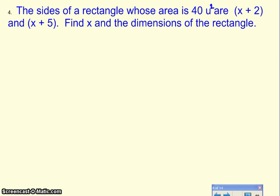This problem says the sides of a rectangle, whose area is 40 units squared, are x plus 2 and x plus 5. Find x, so that's the first thing we'll have to do, and the dimensions of the rectangle. So it looks like a problem like this, there's two parts to it.